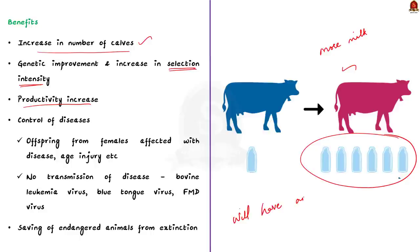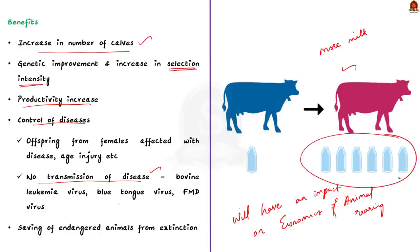The fourth benefit is helping control diseases and other factors. It is possible to obtain offspring from a genetically valuable female affected by disease, injury, or age. It also helps avoid transmission of diseases — embryos collected from cows with bovine leukemia virus, bluetongue virus, or FMD virus, if washed properly and transferred to unaffected recipients, will not transmit the disease. Finally, endangered animals can be saved from extinction by embryo production and cryopreservation. If you know any other benefit, comment below.